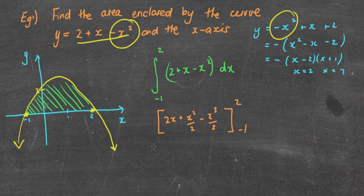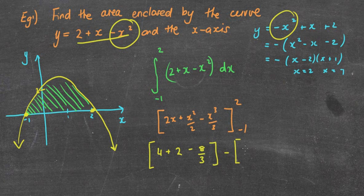And so I'm going to be putting in here, 2 times 2 is 4, plus 2 squared is 4, 4 divided by 2 is 2, minus 2 cubed is 8, 8 divided by 3, well, it's not going to be very nice, so I'm going to put it as 8/3, minus brackets, 2 times -1 is -2, plus -1 squared is 1/2, minus -1 cubed is -1, so it becomes a positive 1/3.